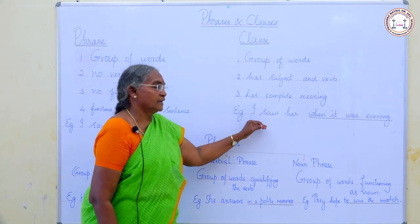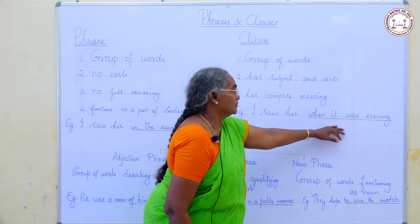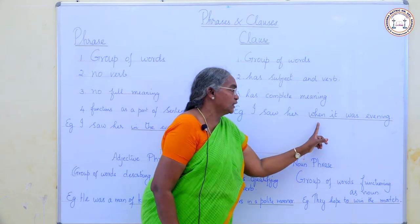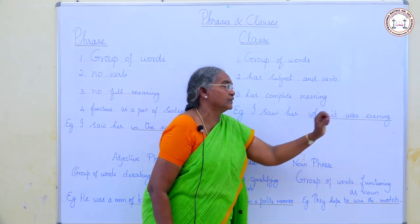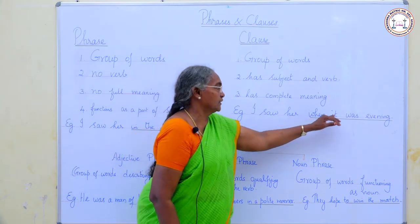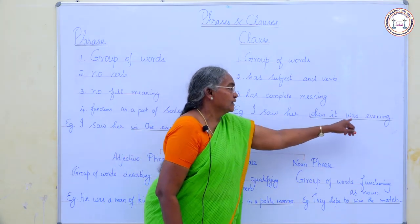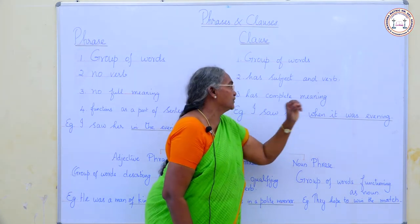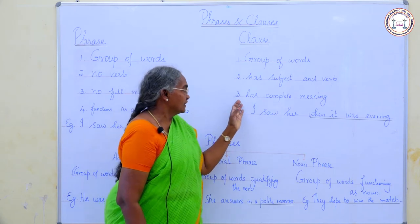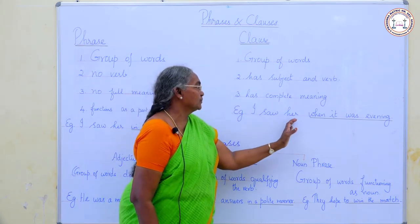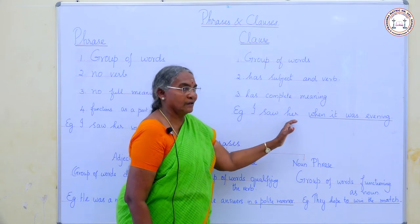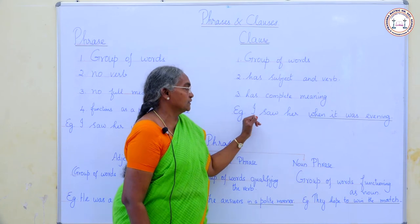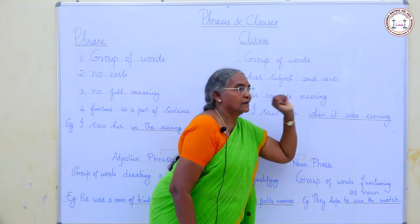Example: 'I saw her when it was evening.' So, 'when it was evening' — here there are group of words. It has a subject and verb. 'I saw her' also has complete meaning. This is one clause and 'when it was evening' is also another clause.